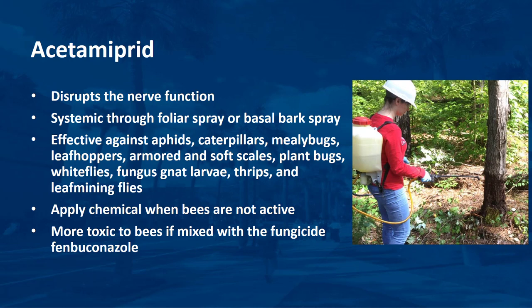This neonicotinoid is classified as reduced risk by EPA. It kills insects by disrupting nerve function. Acetamiprid is systemic and absorbed through the foliage or when applied as a basal bark spray. It is labeled to control a broad range of pest insects on ornamental plants including aphids, caterpillars, mealybugs, leafhoppers, armored and soft scales, plant bugs, whiteflies, fungus gnat larvae, thrips, and leaf-mining flies. Because acetamiprid is toxic to multiple caterpillar species, this product should not be sprayed or allowed to drift into known habitats for threatened or endangered species of caterpillars and butterflies. Although acetamiprid is less toxic to bees than other neonicotinoids, it is still toxic to bees directly exposed to the chemical. Apply acetamiprid in the evening, night, or early morning when bees are not visiting blooming plants. When the fungicide propiconazole is combined with acetamiprid, the mixture is about five-fold more toxic to honeybees than acetamiprid alone.